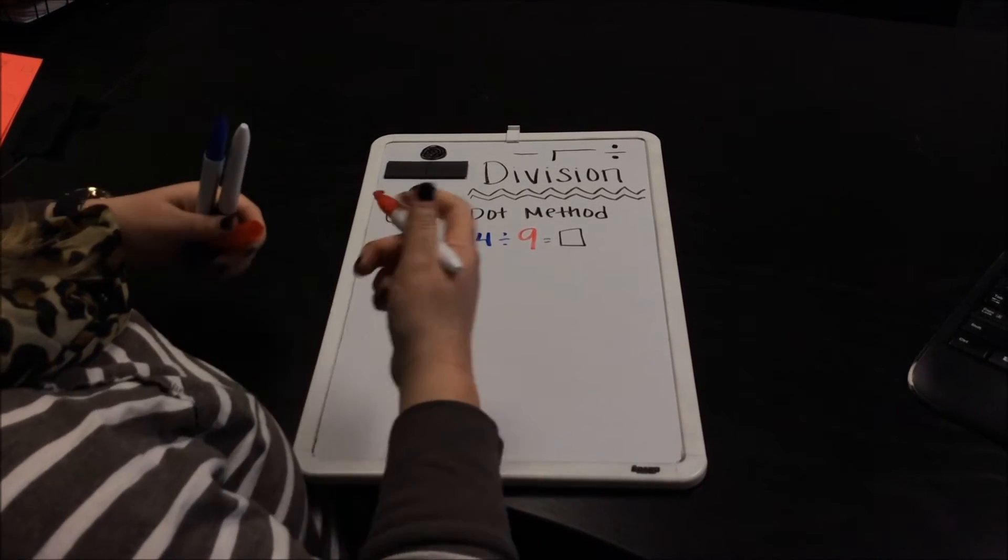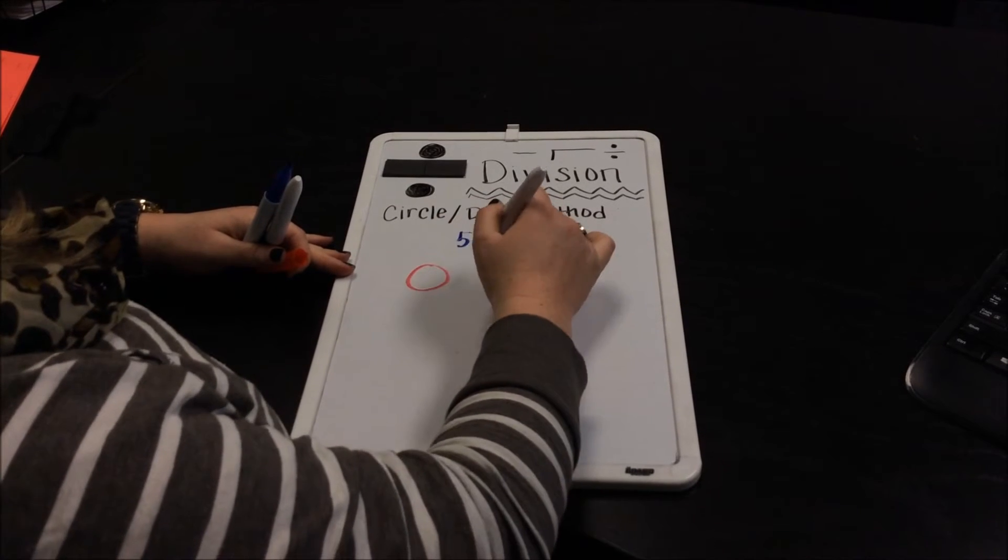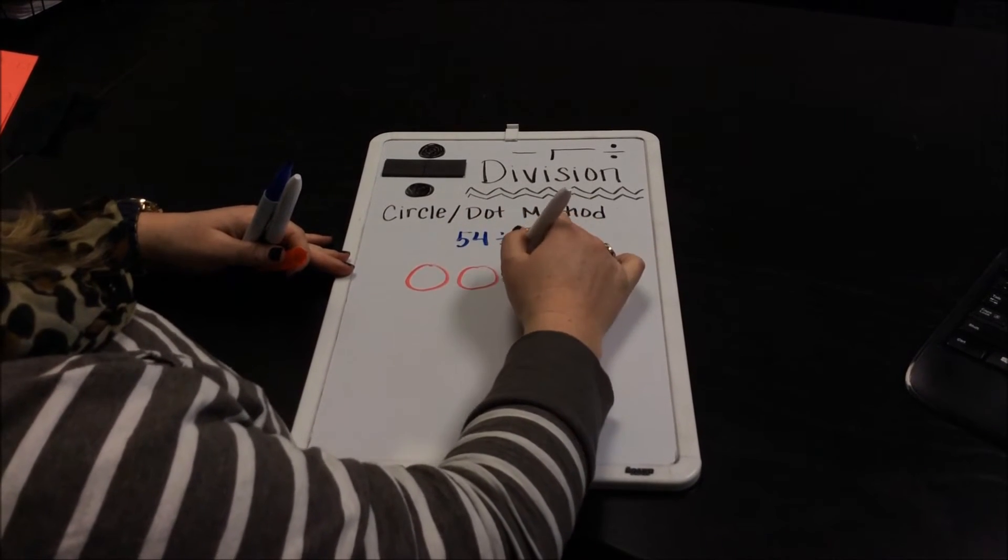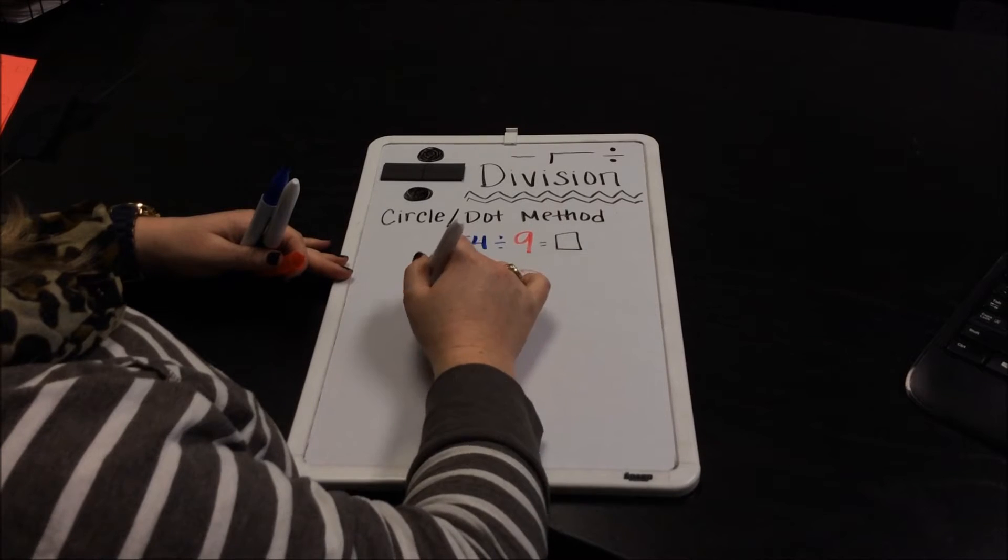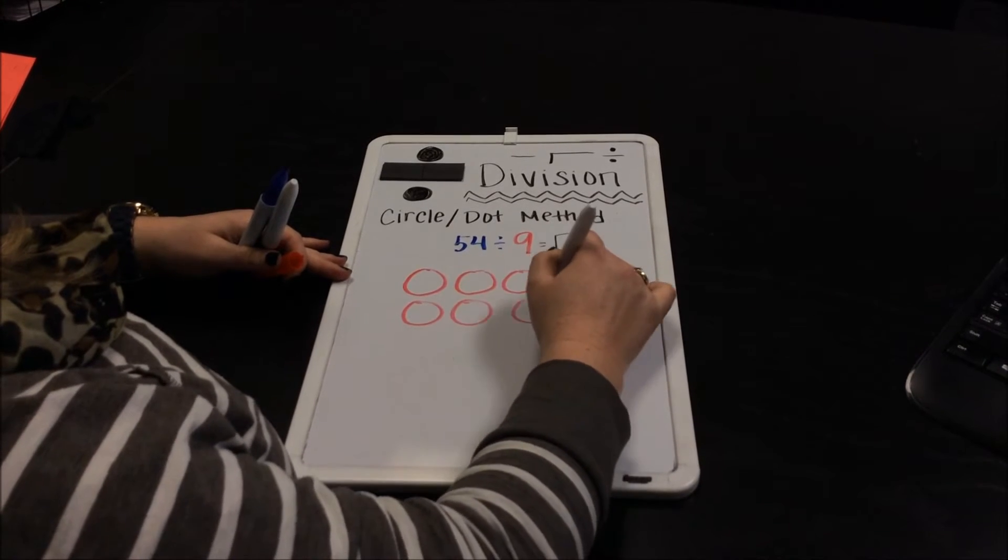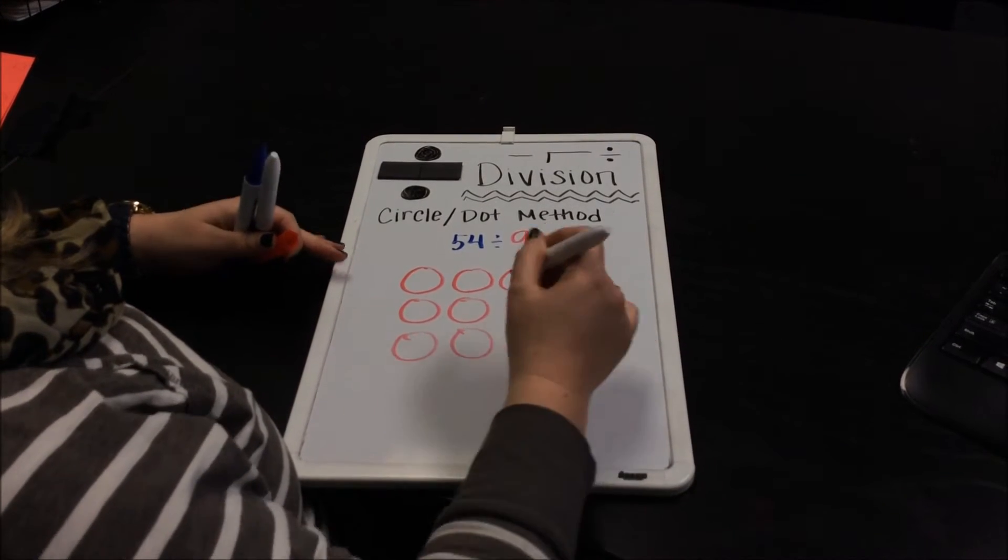So you're going to make that many circles, you're drawing that many circles, so 9 circles. 1, 2, 3, 4, 5, 6, 7, 8, 9.